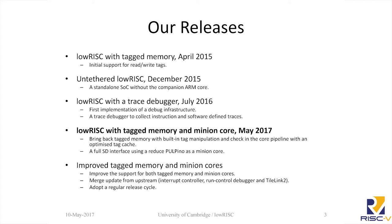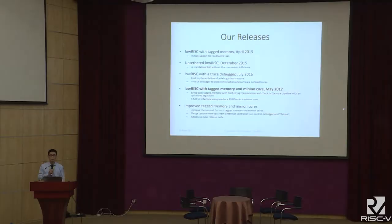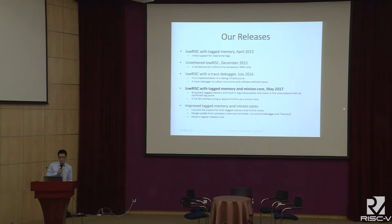Here we'll show you three of our previous releases. The first release is about tagged memory, though it was very simple — we only provided instructions to read and write a tag into the cache, which is actually in memory. After that, we found the ARM core using Zynq MPA was a problem because we couldn't run standalone on an FPGA, so we managed to replace the ARM and allow the Rocket core to run standalone — we call it untethered. Then last year, we added a trace buffer into the Rocket chip, so you can collect trace information including hardware trace and user-defined software trace from the program. This allows you to do debugging without stopping the processor, which is also a perfect way to do logic debugging.